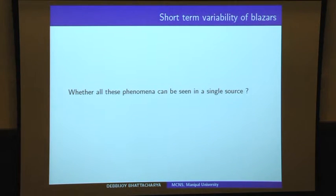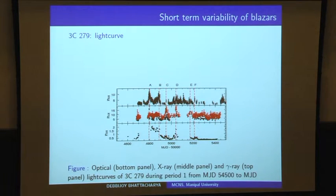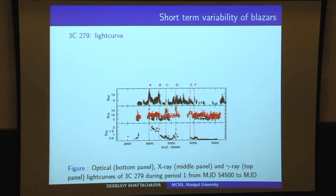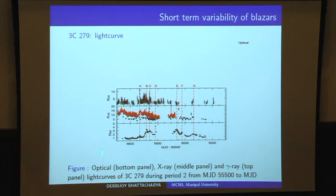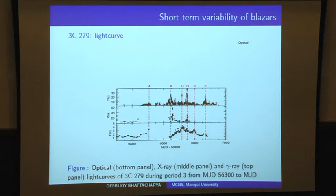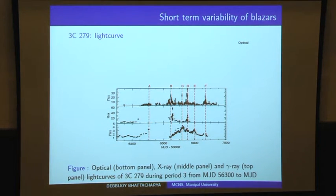The question is whether all these phenomena can be seen in the same source. When we studied 3C279 with a full seven years of data, dividing it into three parts, in the first part one can see correlated flares in gamma-ray, X-ray, and optical R-band. In the next stage, we can see orphan optical flares. And as Vaidehi also mentioned, the same source also shows orphan gamma-ray flares in another interval. This is, I believe, the first source where we have seen all possible scenarios — orphan flares as well as correlated flares — in the same source.